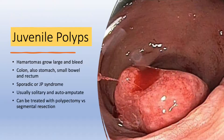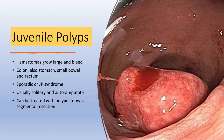Juvenile polyps are hamartomas that can grow and bleed. Most commonly found in the colon, they can also be found in the stomach, small bowel, and rectum. They are typically sporadic but can be part of juvenile polyposis syndrome. When sporadic, they are typically solitary and will grow large and auto-amputate. These polyps can be treated with polypectomy versus segmental resection depending on size and location. If bleeding from the site of amputation occurs, endoscopic clipping can be performed to the stalk.